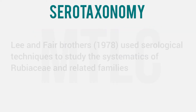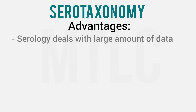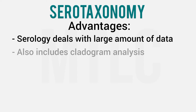Serological data was used to classify angiosperms. Fair Brothers used serological data for orders and families — rubiales, phagiales, and ranunculiales — using the technique of serotaxonomy. In serotaxonomy, the data size is very high because they take a large pool of antigen-antibody reactions and do a cladogram analysis.